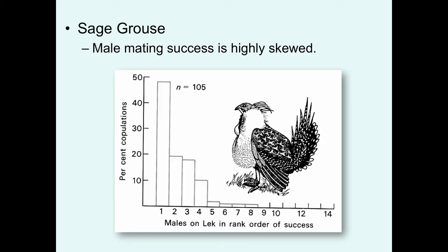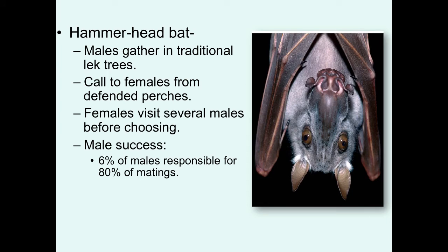A similar pattern of skewed mating success is seen in sage grouse, which gather at leks and perform booming vocalizations and elaborate dances. In one study, the alpha male received almost 50% of copulations, the second male about 20%, with a drastic drop-off after the third male. Hammerhead bats also lek in traditional trees, calling to females from small display perches. Studies show 6% of males at a lek are responsible for 80% of matings.